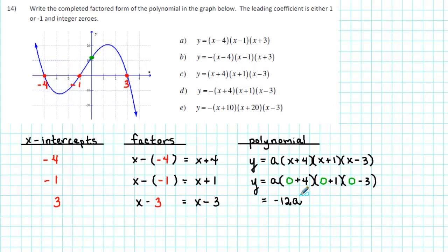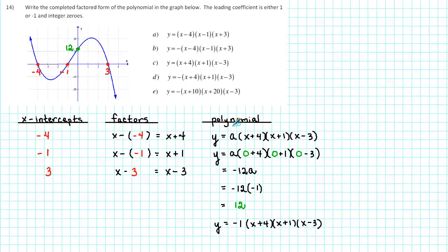Now, we know that a is either 1 or negative 1. If a is equal to 1, then we get negative 12 times 1 is negative 12. But the y-intercept is not negative — it's positive — so a cannot be 1. It must be negative 1. Negative 12 times negative 1 is positive 12, and looking at the graph, it certainly seems reasonable that our y-intercept is 12. When we substitute negative 1 for a in the polynomial, we get y is equal to negative 1 times the factor x plus 4 times the factor x plus 1 times the factor x minus 3.